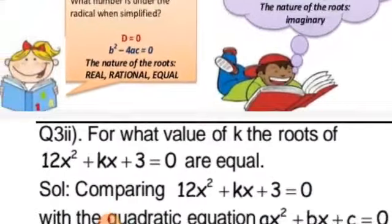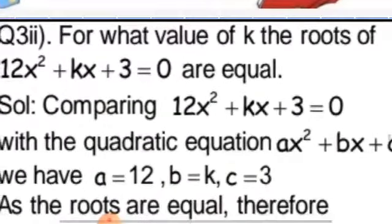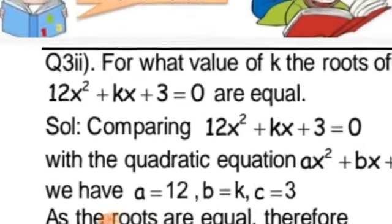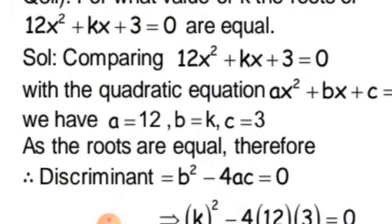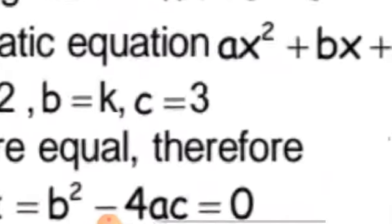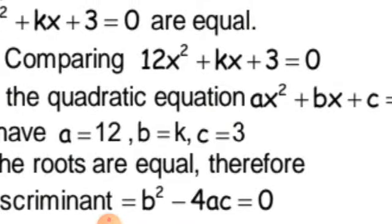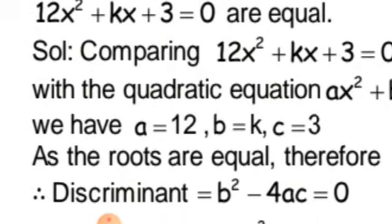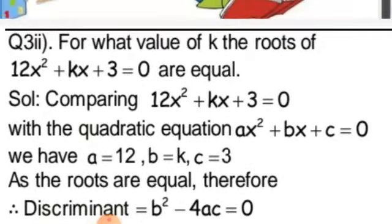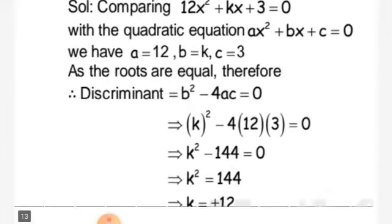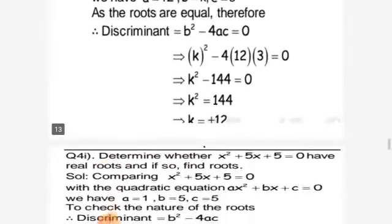Question number three: for what value of k are the roots of the equation equal? We compare the given equation with the standard quadratic equation ax² plus bx plus c to find a, b, and c. We get a equals 12, b equals k, and c equals 3. For equal roots, discriminant equals zero: b² minus 4ac equals zero. Solving gives k equals 12.